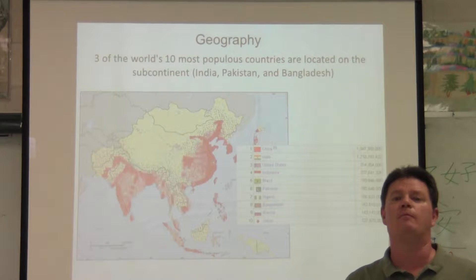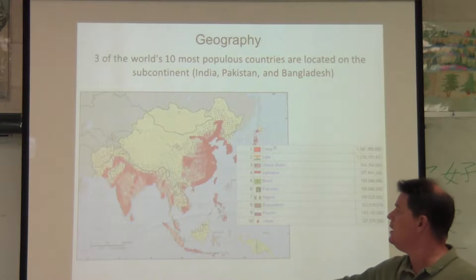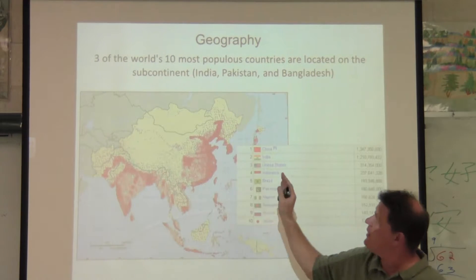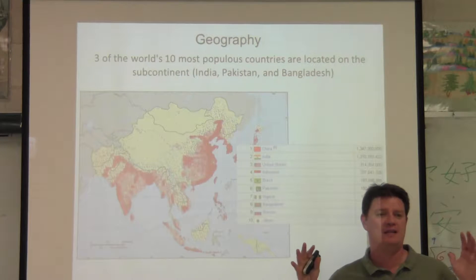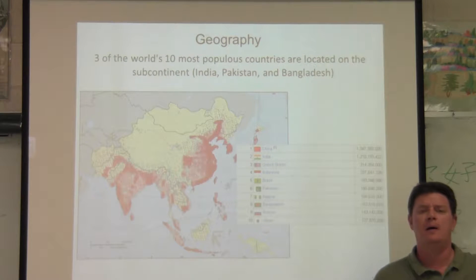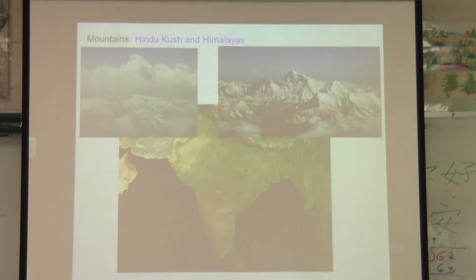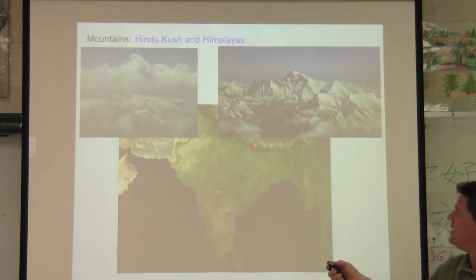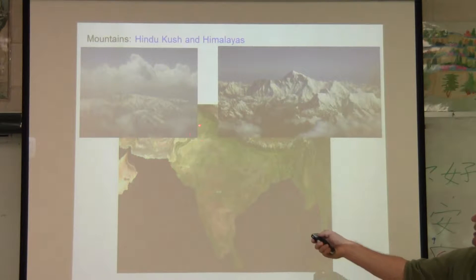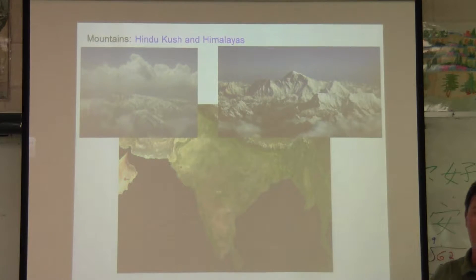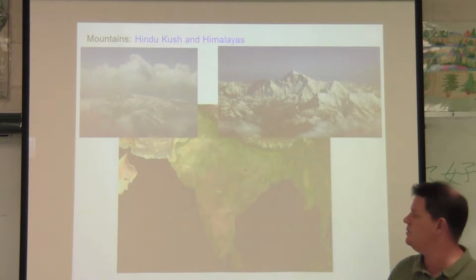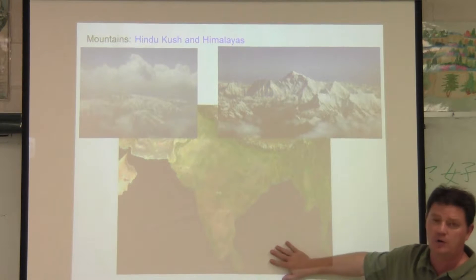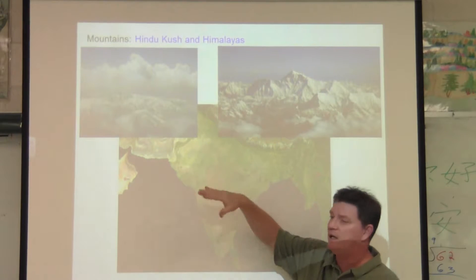The Indian subcontinent is made up of more than just the modern country of India. You can see by the red here — on the Indian subcontinent it contains three of the world's ten most populated countries, a very densely populated area: India, Pakistan, and Bangladesh. The things that protect India from the outside, very similar to Egypt, are the dense Himalayan mountains to the north, and the Hindu Kush mountains to the west. Two very big barriers that made it difficult for people to cross. To the south, we have the massive Indian Ocean.